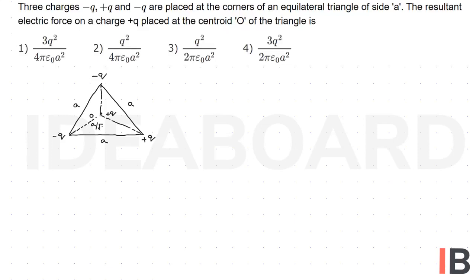That is A by root 3. So let us write OA is equal to OB is equal to OC is equal to A by root 3.